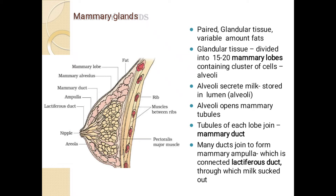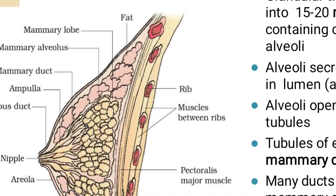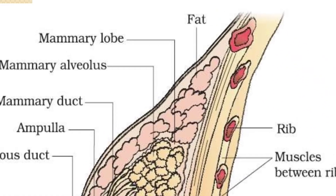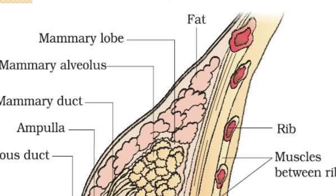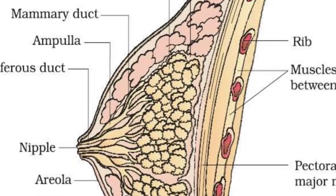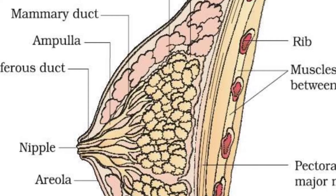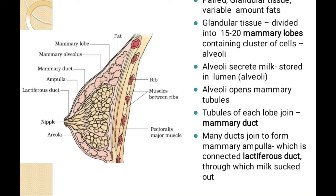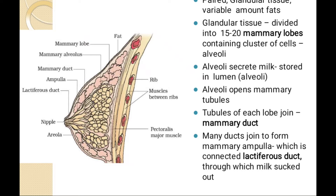What do we call alveoli? Alveoli will secrete milk which is stored in the lumen. Alveoli opens into the mammary tubules, and the tubules of each lobe join to the mammary duct. Here you can see that the mammary lobes are present. Mammary lobes are differentiated into mammary alveoli which is connected to the mammary duct. Here you can see the pipe-like structure which is the mammary duct.